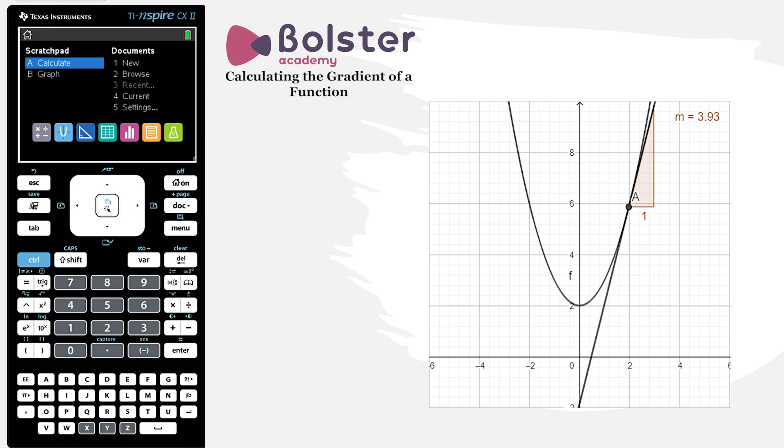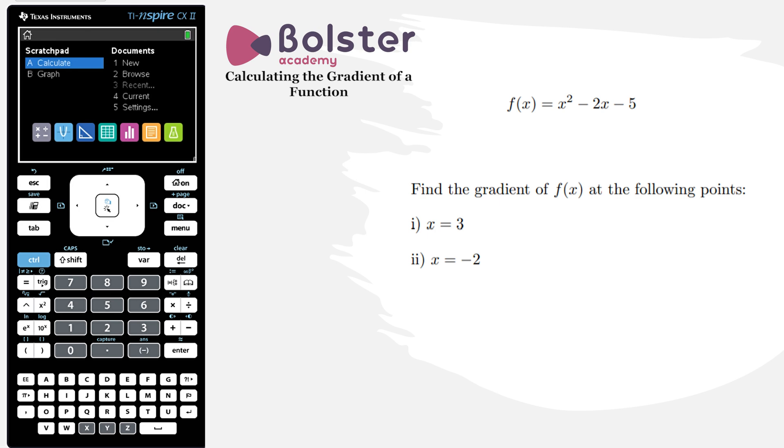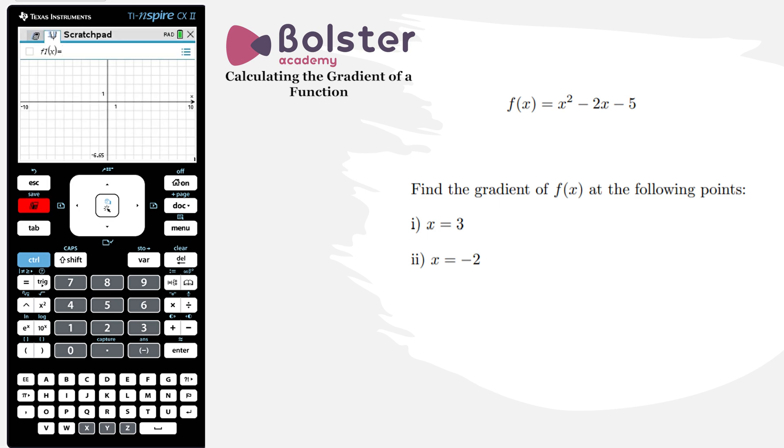So next, how do we find it on our calculator? So we hit Scratchpad. We hit it again to get into the graphical display. And now we just stick in the equation of our curve. So in this case, it's going to be x squared minus 2x minus 5.